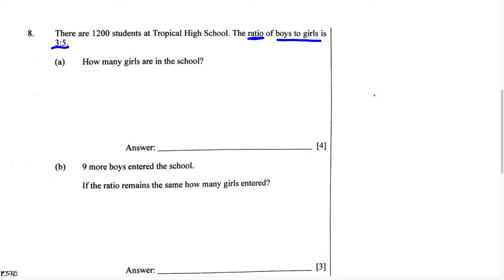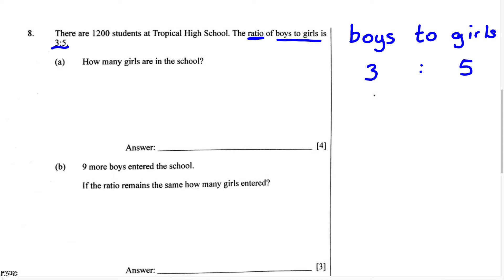They tell us the ratio is going to be 3 to 5. So this is very important. In this problem, the ratio is going to be boys to girls, and we know the ratio of boys to girls is going to be 3 to 5. It's not going to be 5 to 3. Because boys came first, we know the first part of the ratio, which is 3, is going to represent boys. And because girls came second, we know the second part of the ratio is going to represent girls. So we couldn't write this ratio as 5 for boys and 3 for girls — because boys came first, we had to use the first part. Just always remember that.